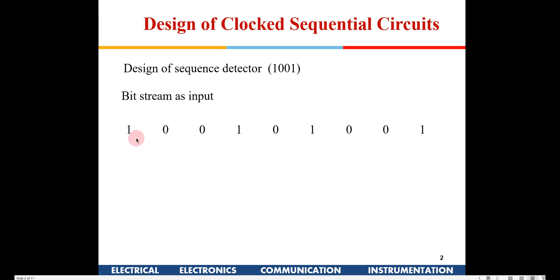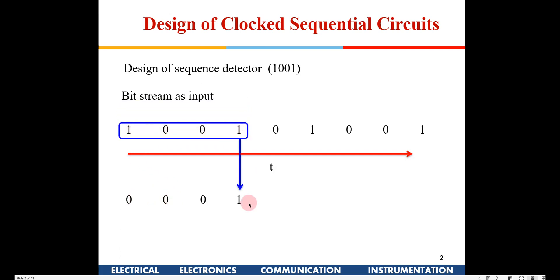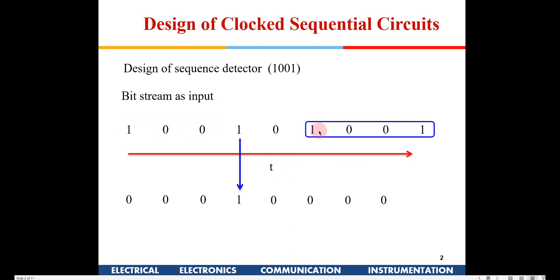If you see here the input is 1, 0, 0, 1. So continuously some sequence is coming. The output here is 0 initially because just a 1 is being received. When I receive 1, 0, 0, 1 the output will go to 1 — that means now this sequence is complete. Whenever I detect this complete sequence the output will go to 1. This is known as a sequence detector. Again it will be 0 until 1, 0, 0, 1 is detected again.